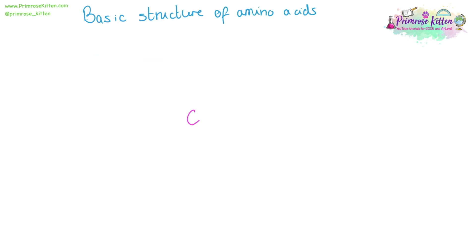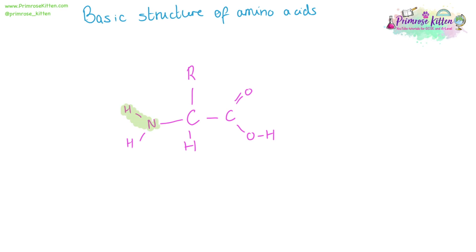It is important that you recognize and can easily draw the basic structure of amino acids: a central carbon leading up to an R-group, which can be anything. Over to the right, generally, a carbon double bonded to an oxygen and bonded to an OH-group. Down below a hydrogen, and on the left-hand side, a nitrogen bonded to two further hydrogens. The NH2-group on the left is the amino group — part of why it's called an amino acid.